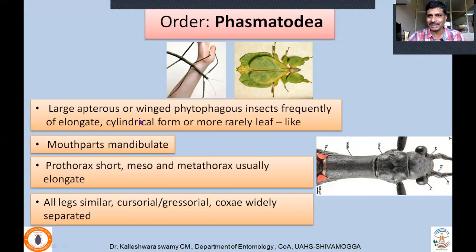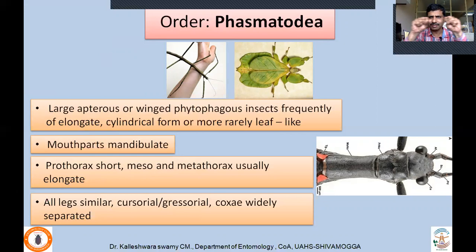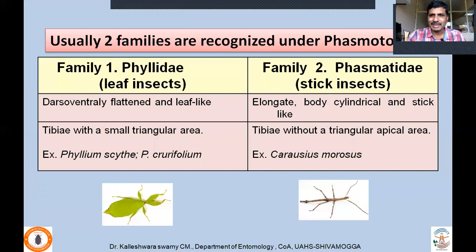Important characters of Phasmatodea: they are large, apterous or winged, phytophagous insects. They are frequently elongated and cylindrical, sometimes leaf-like. Mouthparts are mandibulate type. Prothorax is short, while mesothorax and metathorax are usually elongated. All legs are similar, meant for cursorial or walking purpose — also called gressorial. Coxae are widely separated; in the ventral surface, the coxae are not touching each other from fore to hind legs.